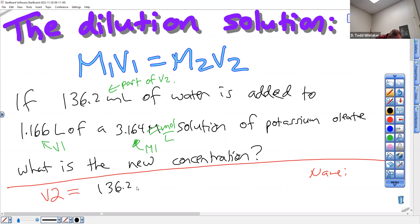136.2 milliliters. Big L over a thousand little mL. 0.136. No. Don't forget. Don't forget. That's only part of it. The other part is that. So 0.1362 liters plus 1.166 liters.